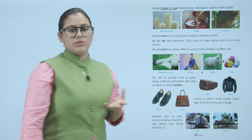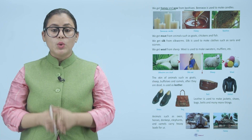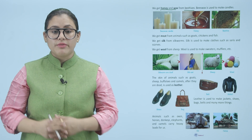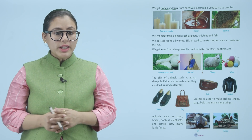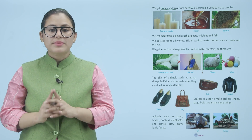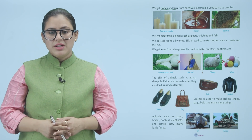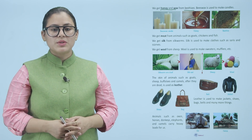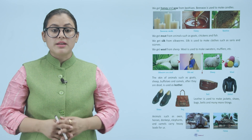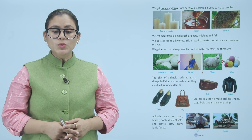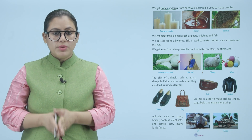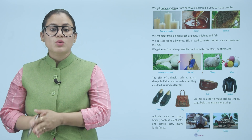We get meat from animals such as goats, chickens and fish. We get silk from silkworms — silk is used to make clothes such as sarees and scarves. We get wool from sheep — wool is used to make sweaters, mufflers and more.